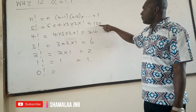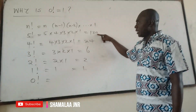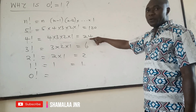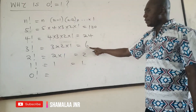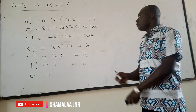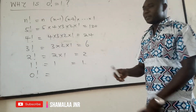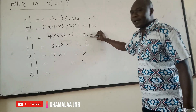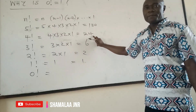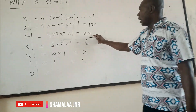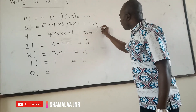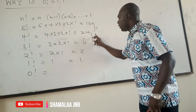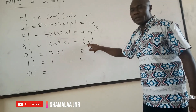5 factorial is 120. 4 factorial is 24. 3 factorial is 6. 2 factorial is 2. Now look at the board — there is a pattern. This is 120. 5 factorial is 120. Now to get 4 factorial, we divide 120 by 5 and you get 24. When you divide 120 by 5, you are getting 24. Now when you have 4 factorial is 24 and you want to get to 3 factorial which is 6, you divide by 4.